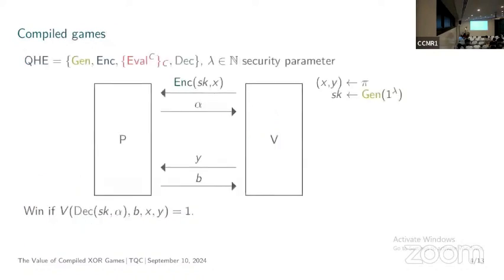What is the compilation we do for such a non-local game? The general idea is that in a non-local game the players are so far apart that they cannot communicate. Instead of having this non-locality assumption, we want to put some cryptographic assumption that should guarantee a similar condition. For this, we use a QHE scheme with algorithms GEN, ENC, EVAL, and DEC, and a security parameter lambda.